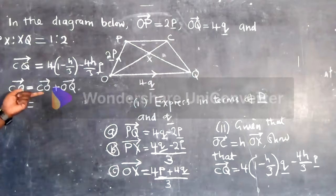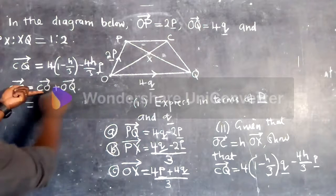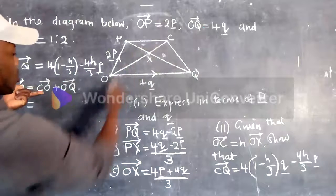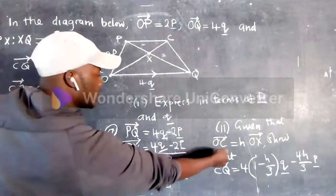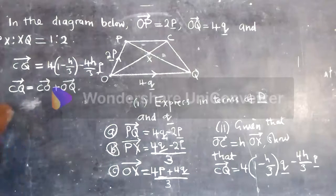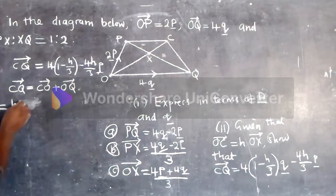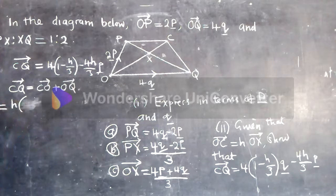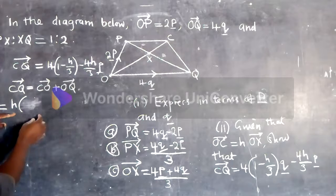So do we have CO? We don't have it, but there is a statement here: OC is equal to H times OX. We put it here, so CO is equal to H times OX.